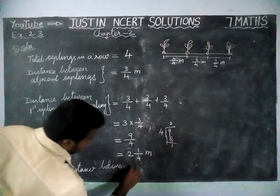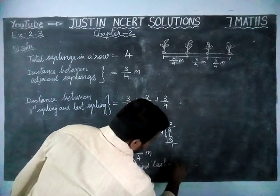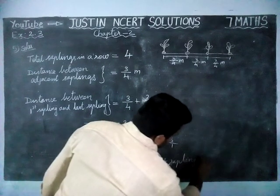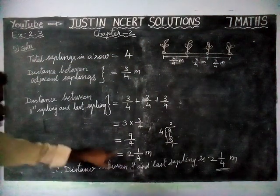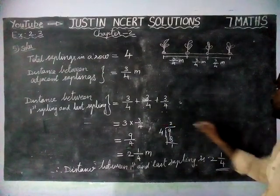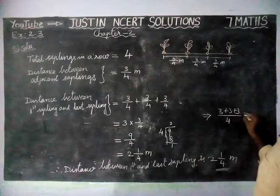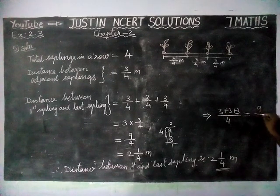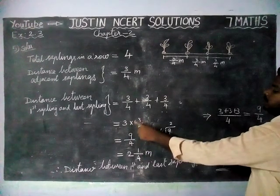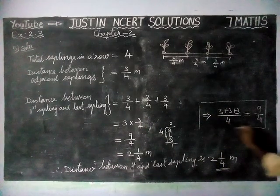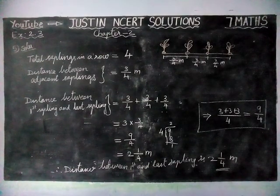Therefore, the distance between the first and last sapling is 2 and 1/4 meter. Here is another method: using common denominator 4, we write 3 + 3 + 3 = 9, divided by 4, then convert to mixed fraction — same result: 2 and 1/4 meter. Thank you students, kindly give your suggestions in the comments box. Those who haven't subscribed, please subscribe and share it with your friends. Thank you.